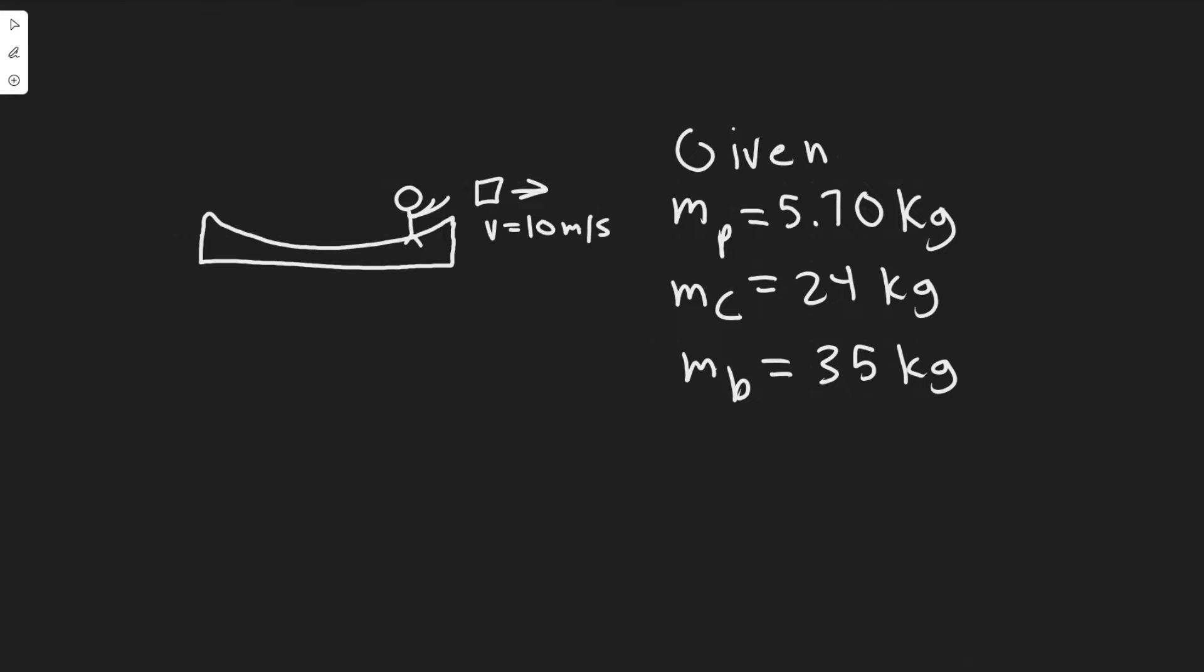In this problem we're told a child in a boat throws a 5.7 kilogram package out horizontally with a speed of 10 meters per second. Calculate the velocity of the boat immediately after assuming it was initially at rest. The mass of the child is 24 kilograms and that of the boat is 35 kilograms.